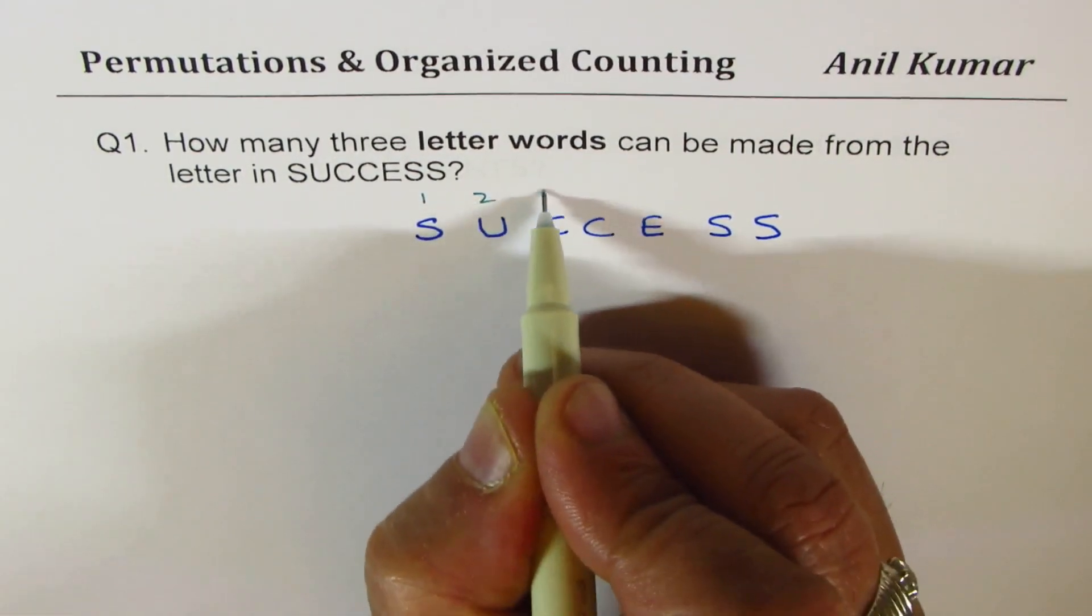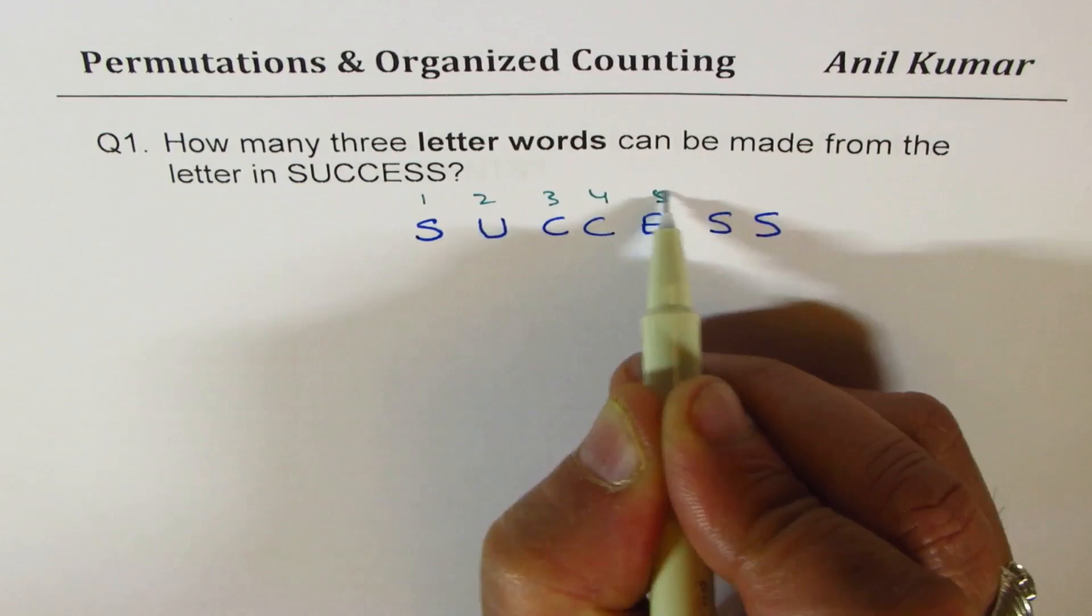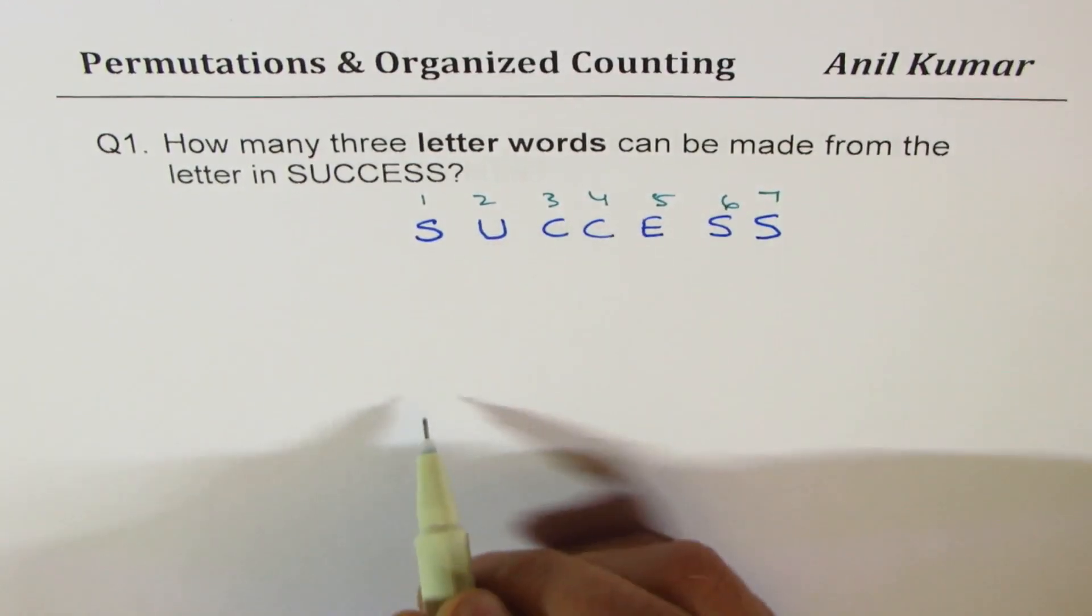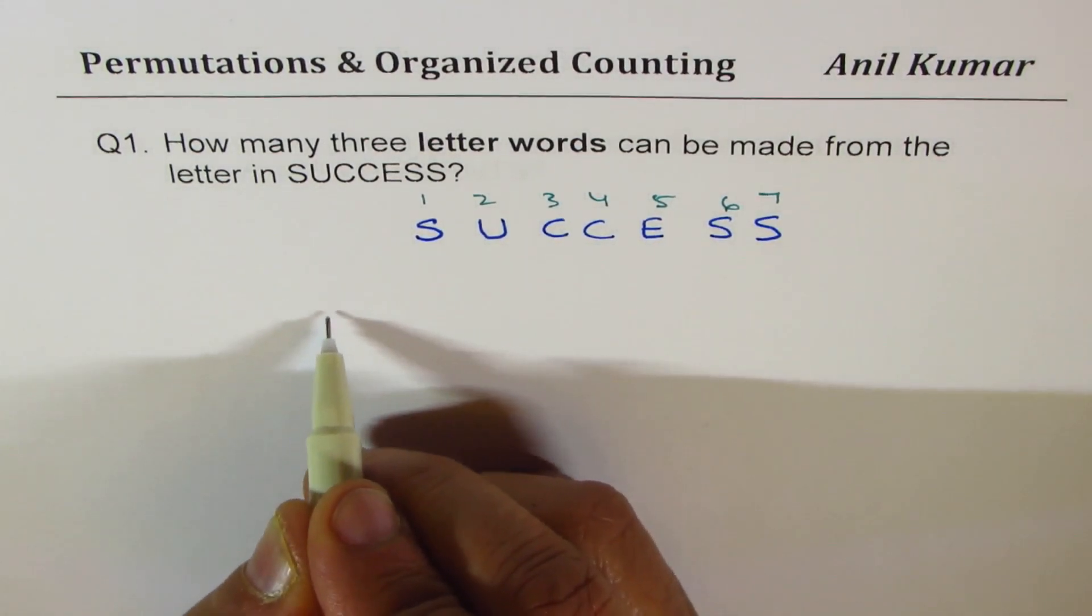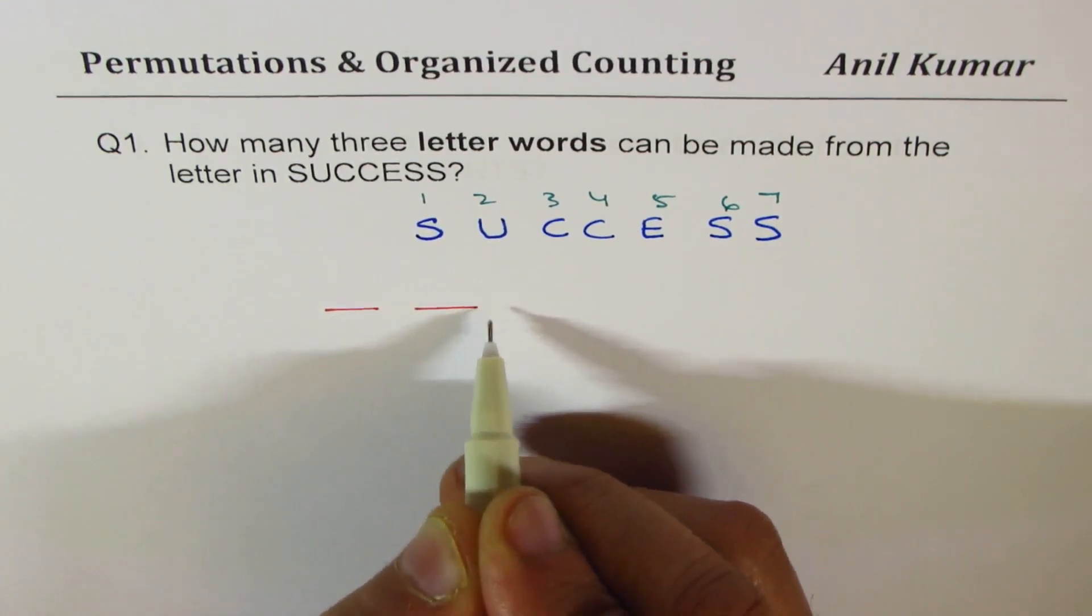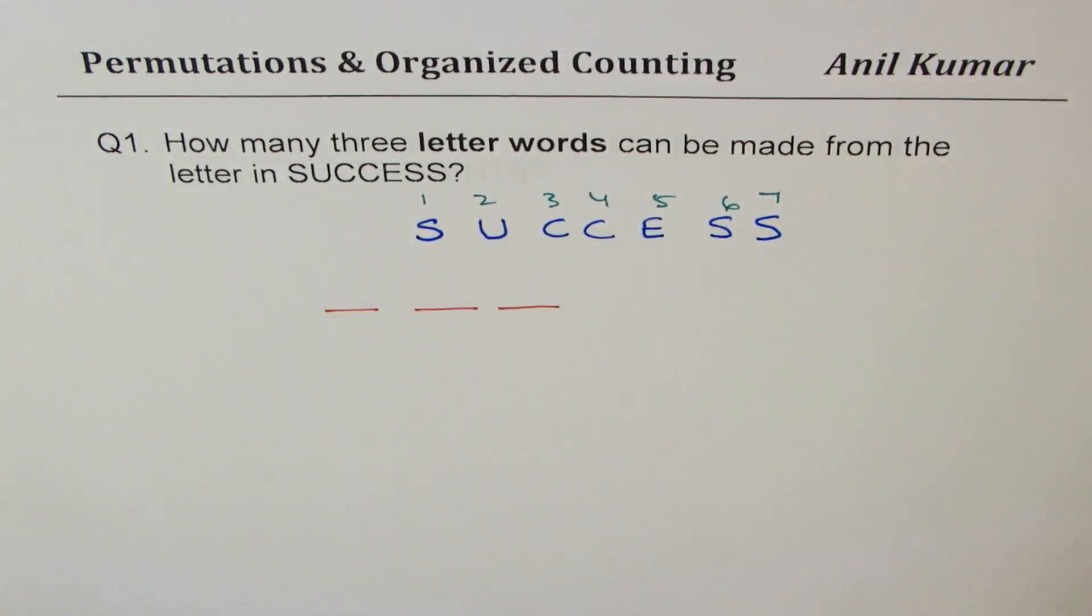We have one, two, three, four, five, six, seven letters. What do we need? We need to place them in a way so that we can fill in three spaces, just three spaces, not all seven. Now, amongst these letters...